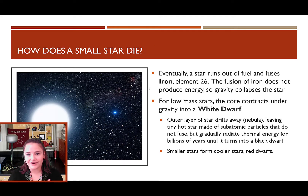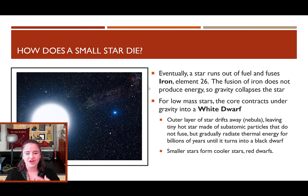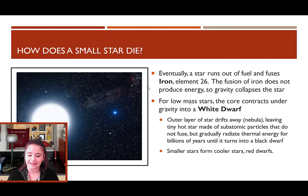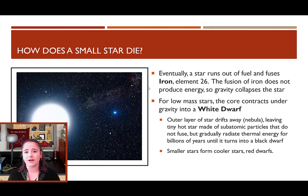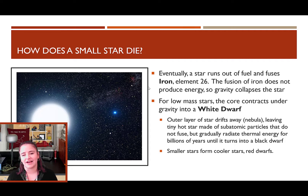Once a star runs out of fuel — once it's fused all heavier elements up to iron, element number 26 — fusion stops producing energy. Fusing iron does not release any energy, so gravity collapses the star. For low-mass stars, this collapse isn't dramatic. The outer layers drift away into space creating a planetary nebula, and what's left behind is a small, hot object made of subatomic particles called electron degenerate matter — a white dwarf. It no longer undergoes fusion but gradually radiates thermal energy for billions of years.